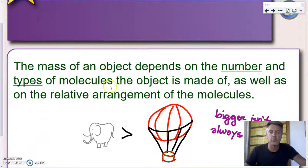So the mass of an object, what does it depend on? It depends only on the number and types of molecules that are inside that object. And also, it depends on how they are arranged. It doesn't depend on where the object is. It doesn't depend on gravity. That's called weight.